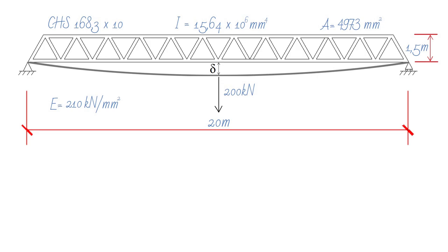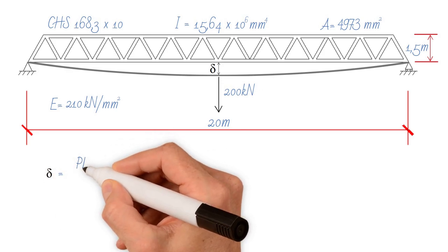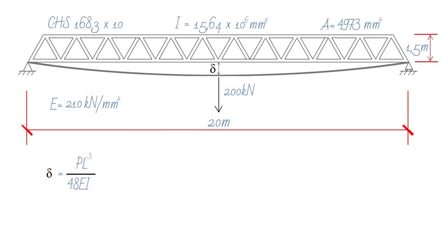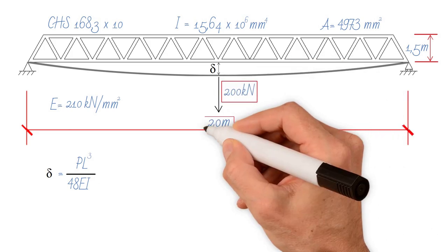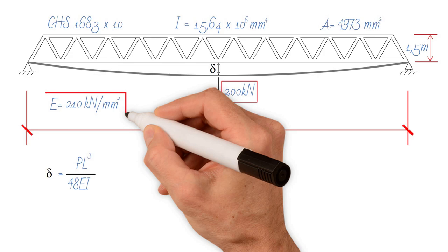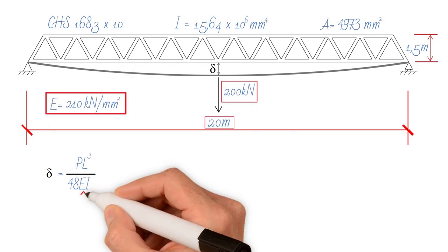If we have a simply supported beam that deflects, the deflection is equal to P L cubed over 48EI. We have most of this information. P is 200 kN, L is 20 meters, E is Young's modulus. So we need to calculate I.